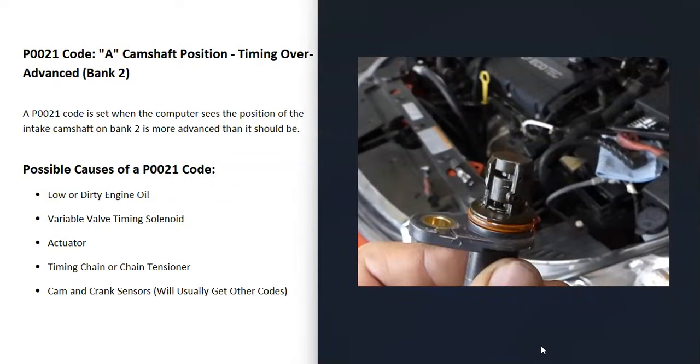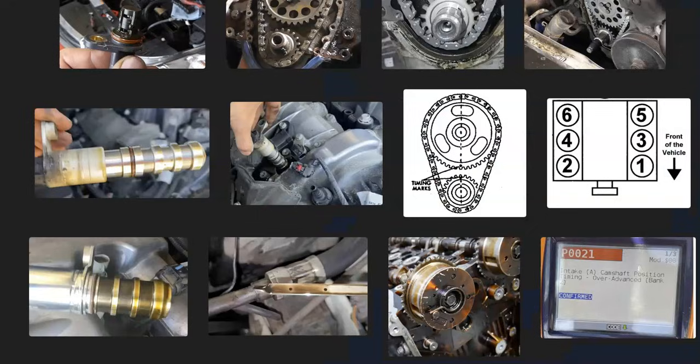The last thing on the list is a cam or crankshaft position sensor, but usually if one of these goes bad you'll get other codes as well. So if you are getting other codes, be sure to pay attention to that.